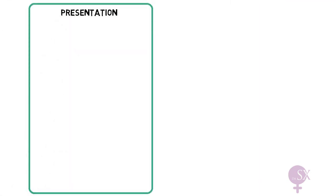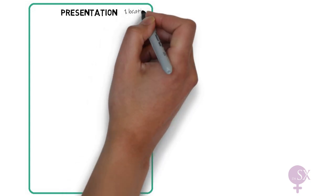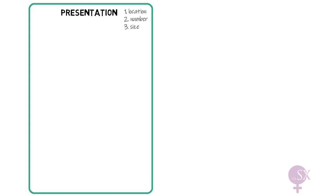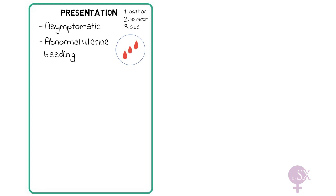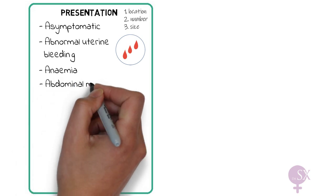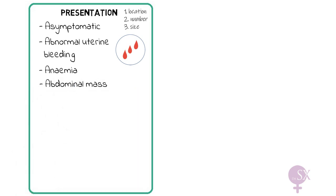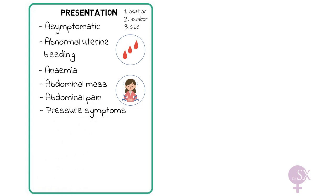Moving on to the presentation of fibroids. Presentation is related to the location, number, and size of the fibroids. If they are small, they most commonly present incidentally and patients are completely asymptomatic. However, most often they present with abnormal uterine bleeding, such as heavy menstrual bleeding. This heavy bleeding might also result in symptoms of iron-deficiency anemia. Large fibroids can present as an abdominal mass. They can also present with abdominal pain because of the pressure fibroids put on pelvic organs. This pressure may also be applied to ureters, causing hydronephrosis; on the bladder, causing urinary retention; and on the fallopian tubes, causing infertility. When fibroids disrupt the endometrial cavity, they can also result in infertility and recurrent miscarriage.